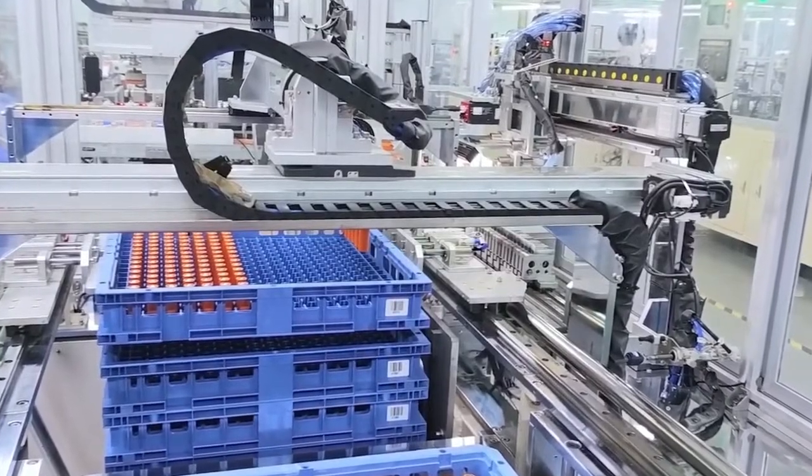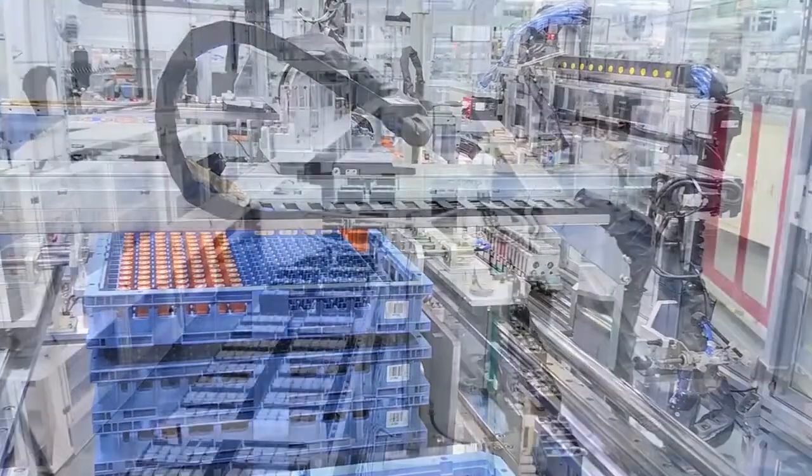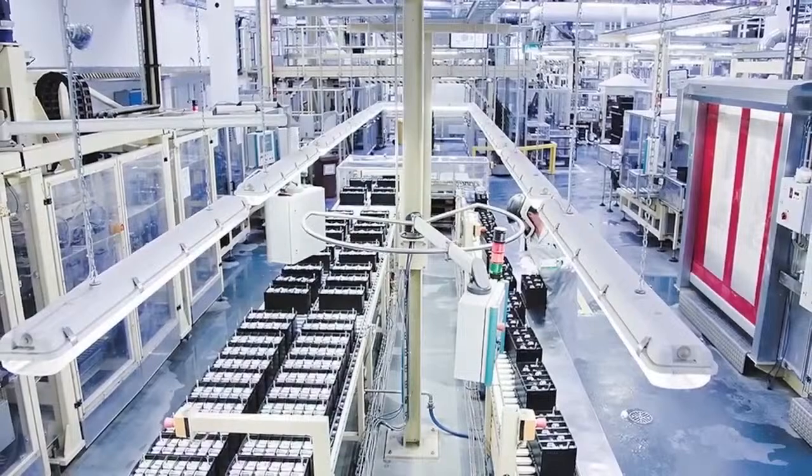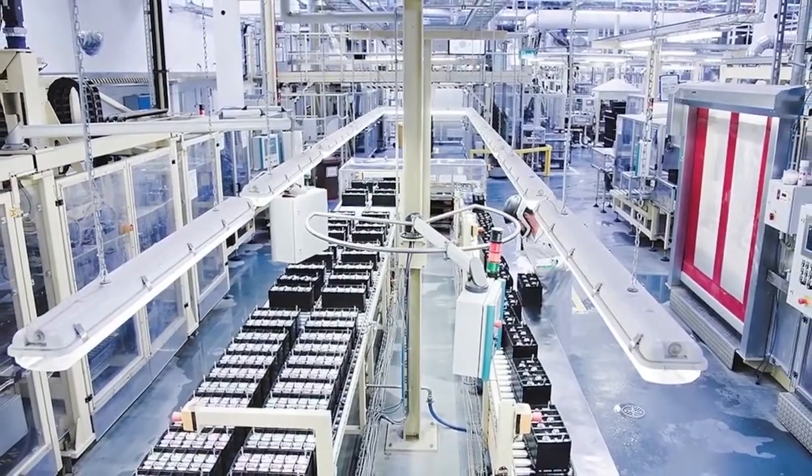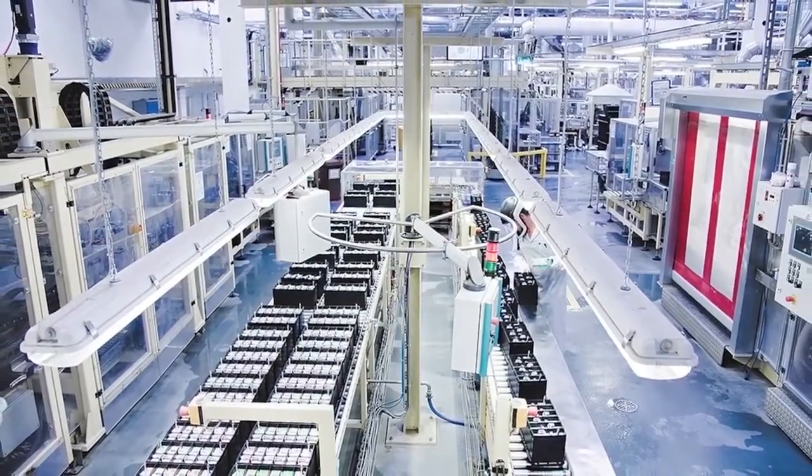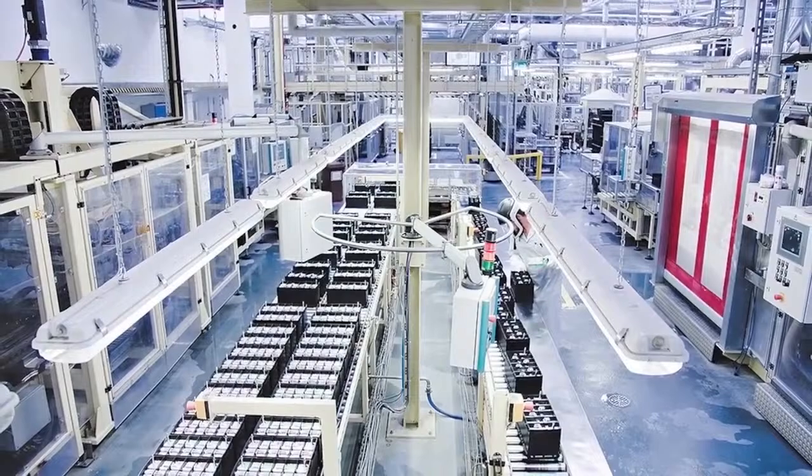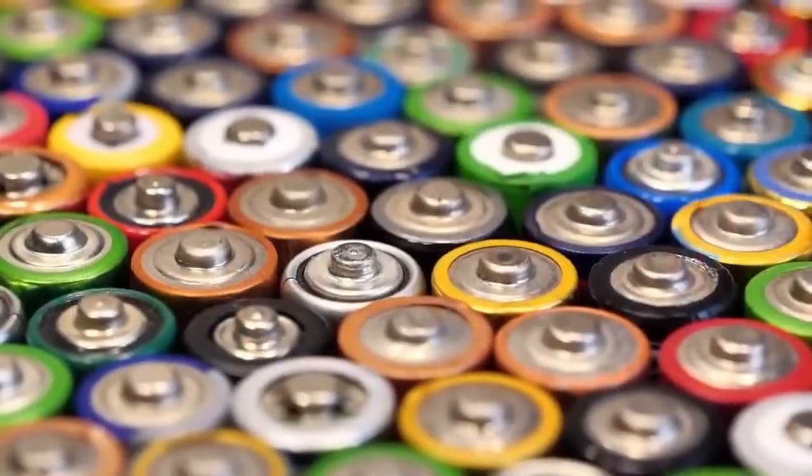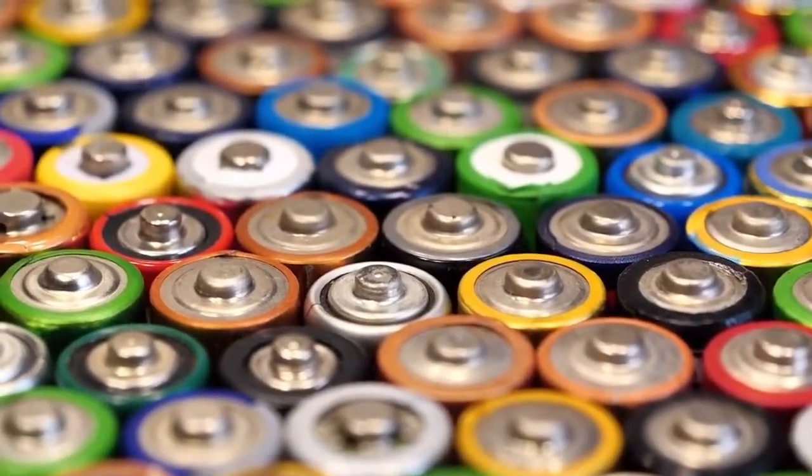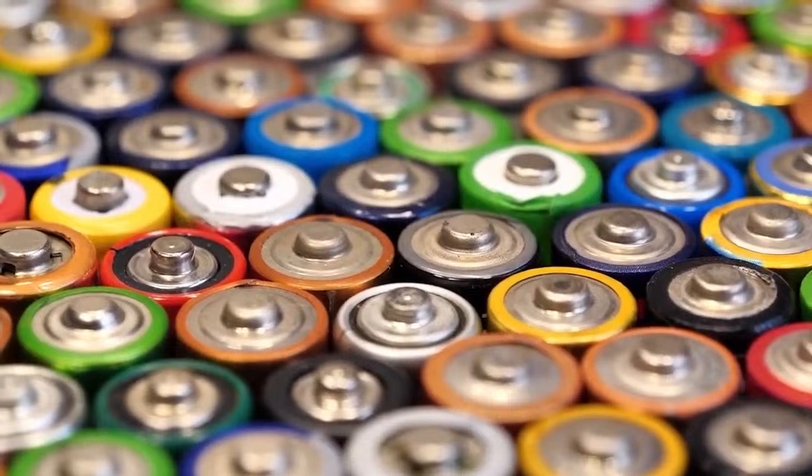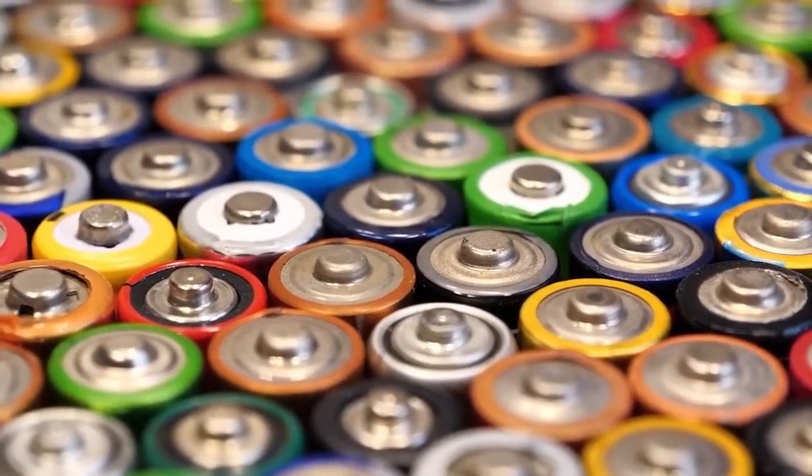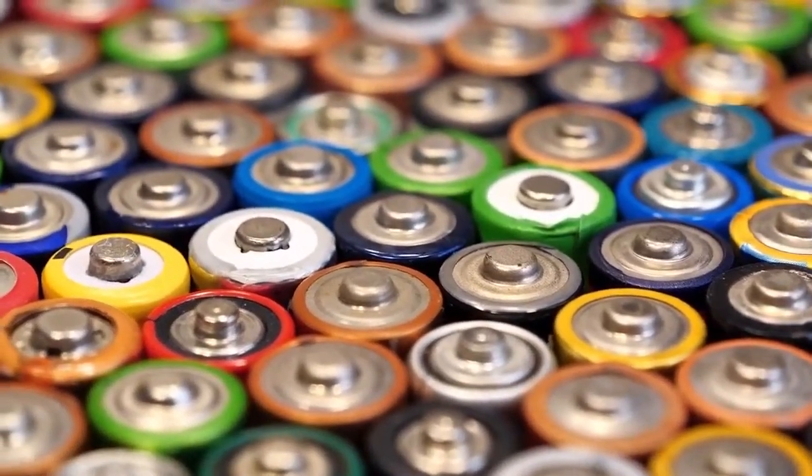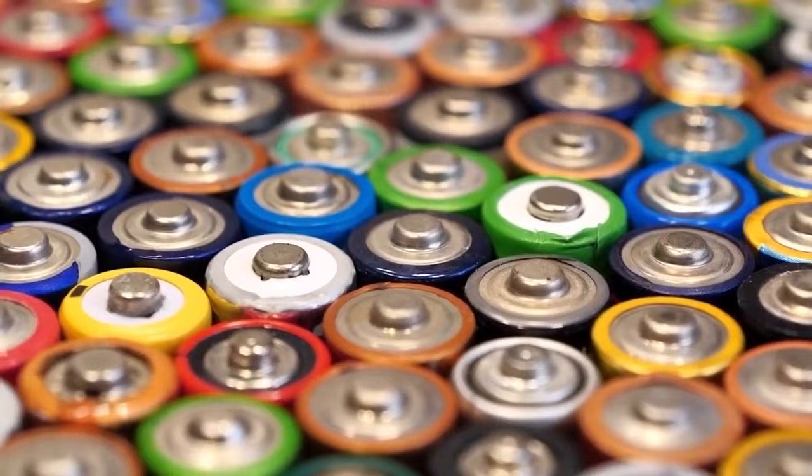Next, the coated foils are passed through a drying process to remove excess solvents, leaving behind thin electrode layers. These electrodes are then cut into precise shapes and assembled into battery cells, along with separators and electrolyte solutions. Assembly lines carefully integrate these components, with each step monitored for quality control and consistency.